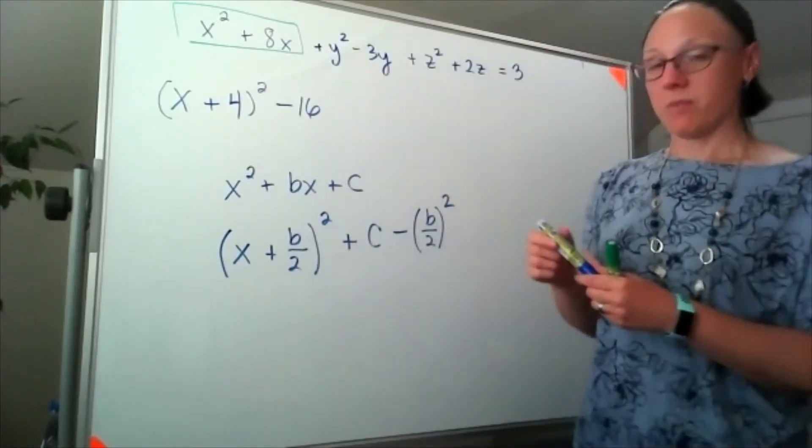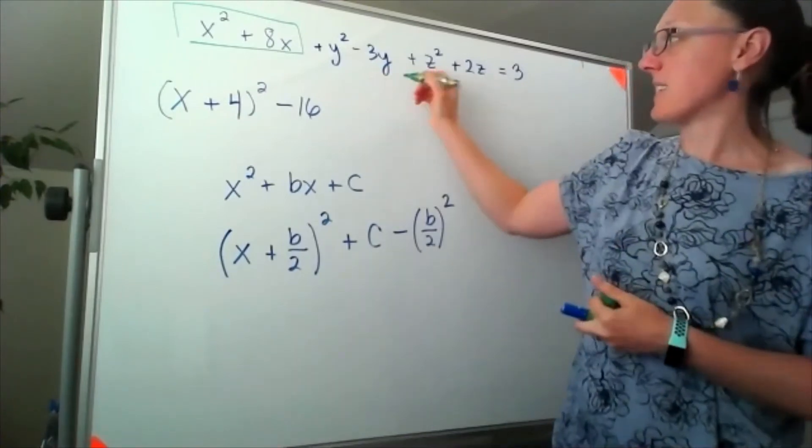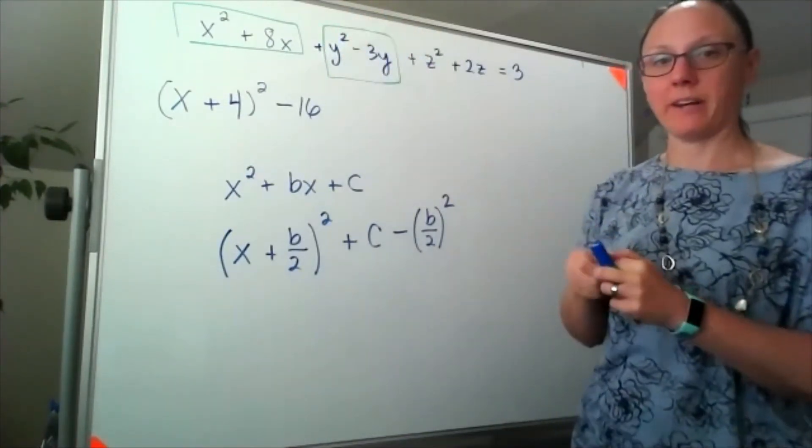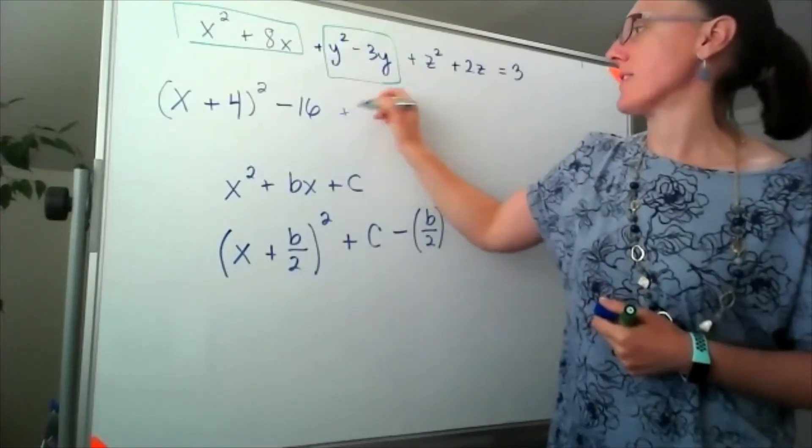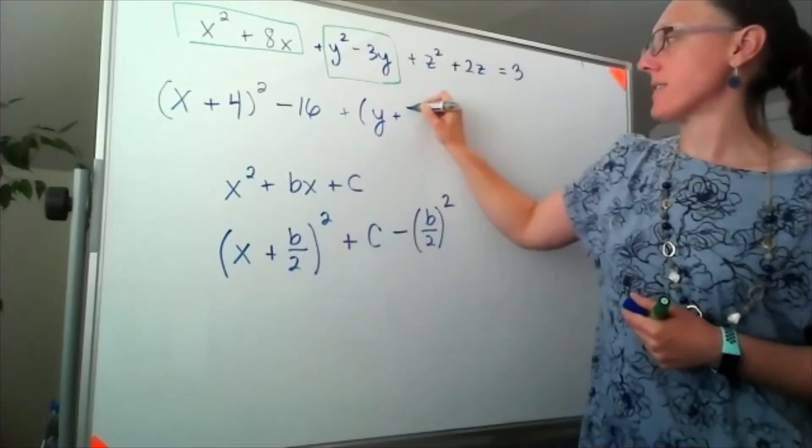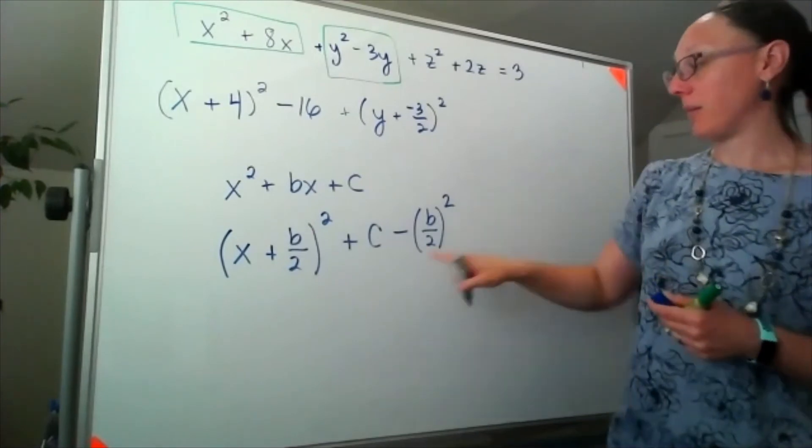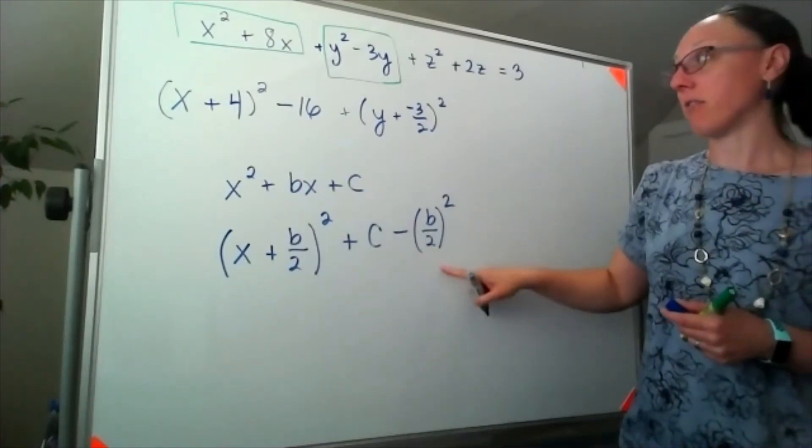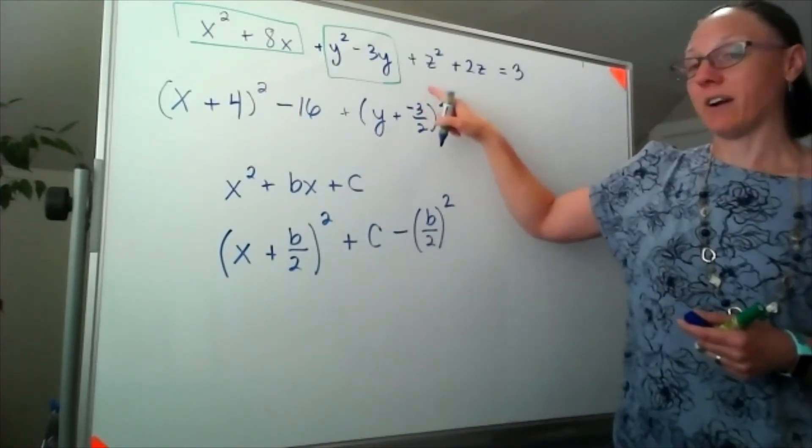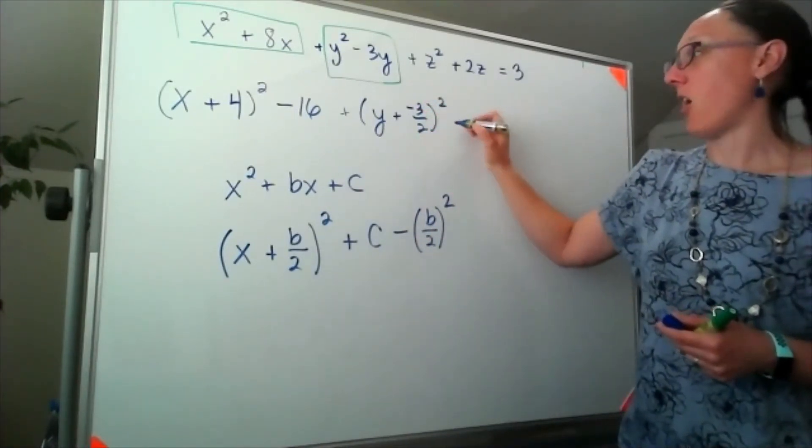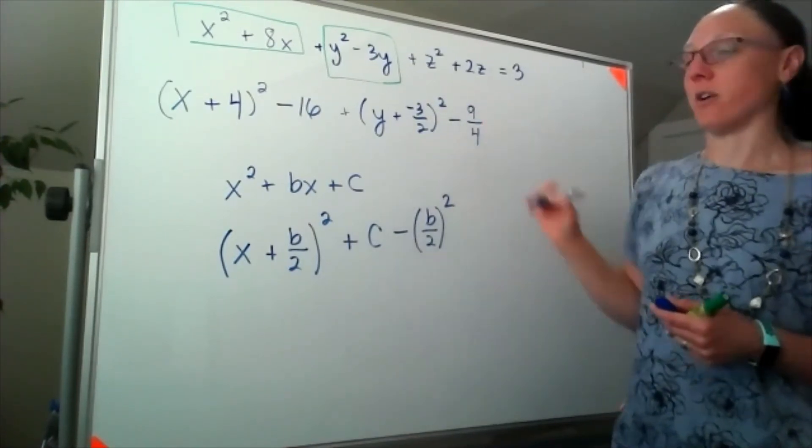If I do the same thing with our y terms, then here it's a little bit messy because we've got fractions. But y squared minus 3y, I'm going to take half of that negative 3. So I'll end up with y plus negative 3 over 2, whole thing squared. And then I'm going to end up subtracting off negative 3 over 2 squared. So if I square negative 3 over 2, I'll get positive 9 over 4. So I'm subtracting off 9 over 4.